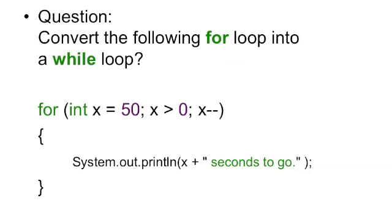The question states convert the following for loop into a while loop. For integer x equals 50, x is greater than 0, and x is decreasing. The system dot out print line x plus seconds to go.